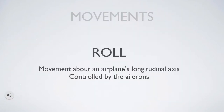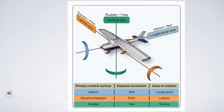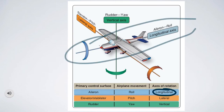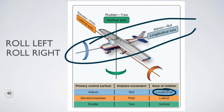Next is roll. Roll moves about the airplane's longitudinal axis. I'm telling you about the axis around which each movement is produced because this is going to show up on your private pilot exam, so it's easy if you just learn it now. Roll moves about the longitudinal axis and it's produced by the ailerons, which are controlled by the yoke.